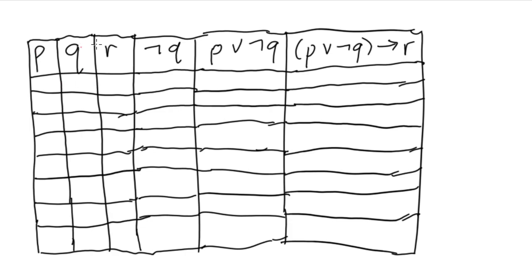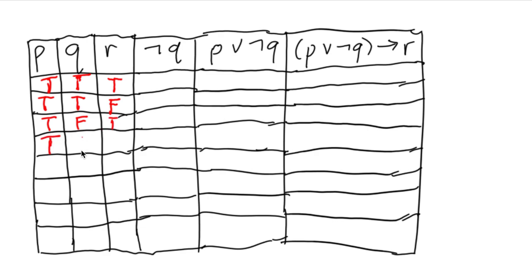We consider all combinations of truth values: first, all of them true. That's the first combination. Next, the first two are true and the last is false. Then true, false, true and true, false, false — considering all combinations of the three propositions.